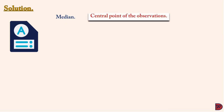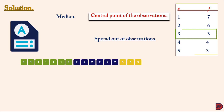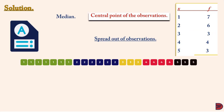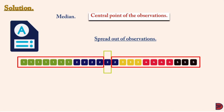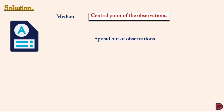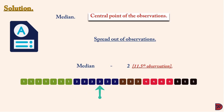For the median — the central point of observations — if you spread out the observations: one appears seven times, two appears six times, three appears three times, four appears four times, five appears three times, giving a total of 23 observations. Since 23 is odd, divide by two to get 11.5, meaning the value after the 11th position is the median. The 11th value is two, and the value following it is also two, so the median is two.